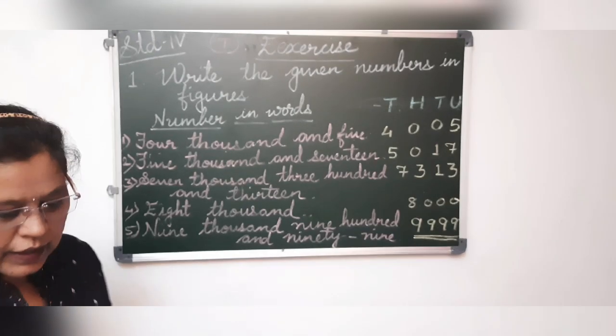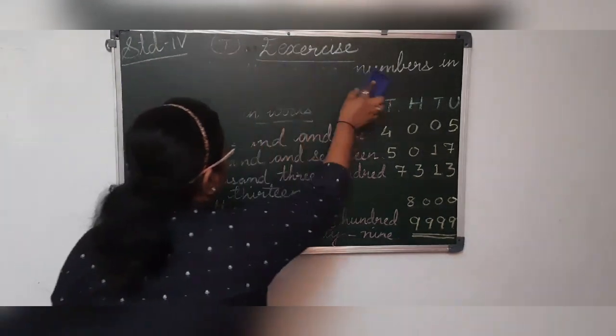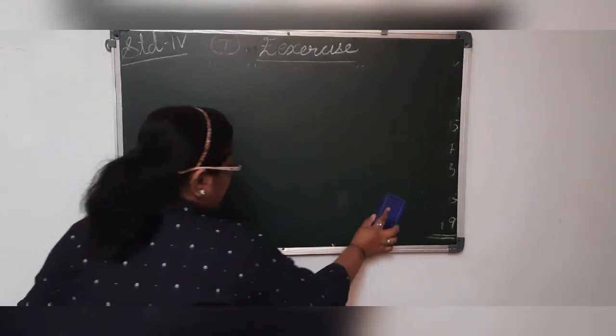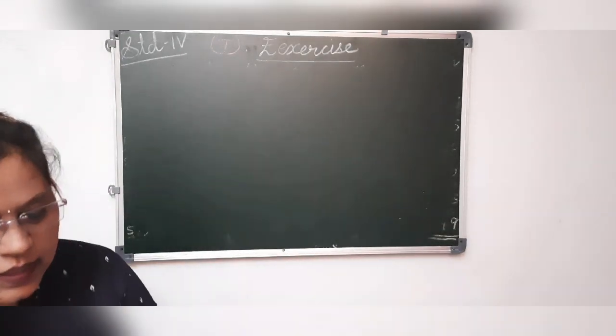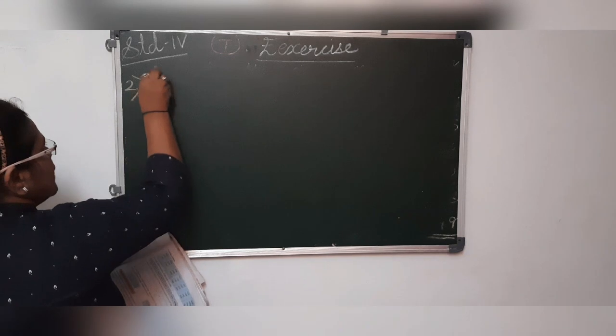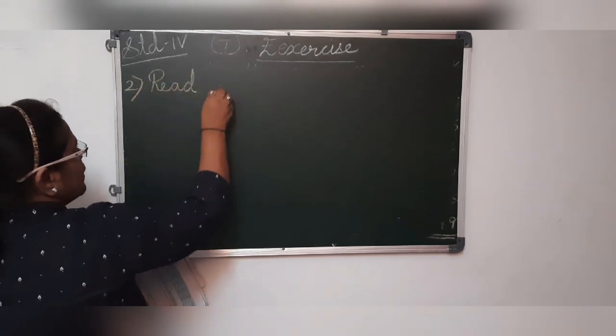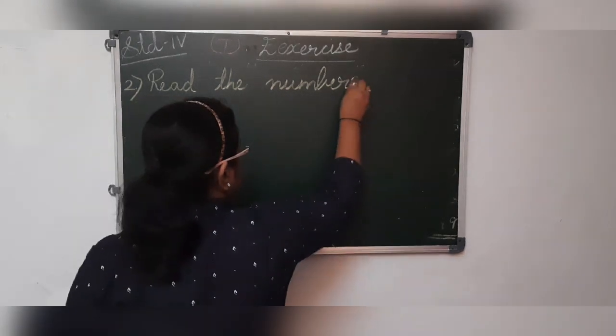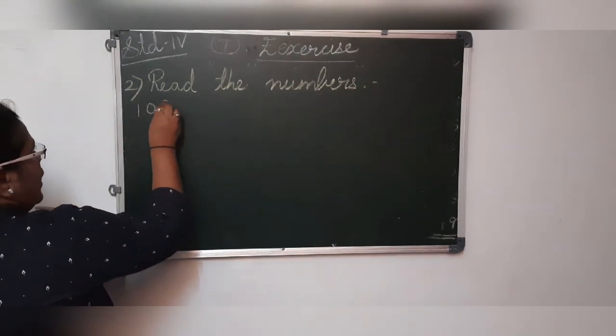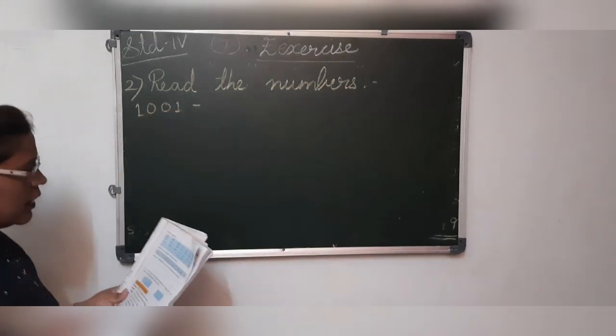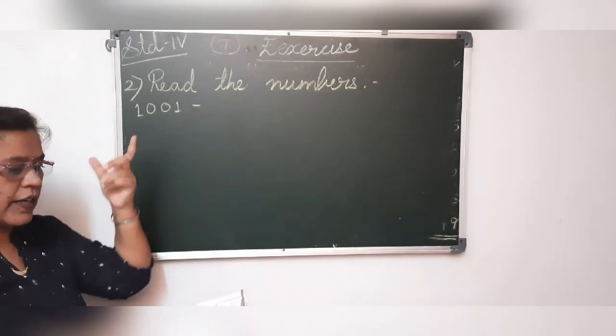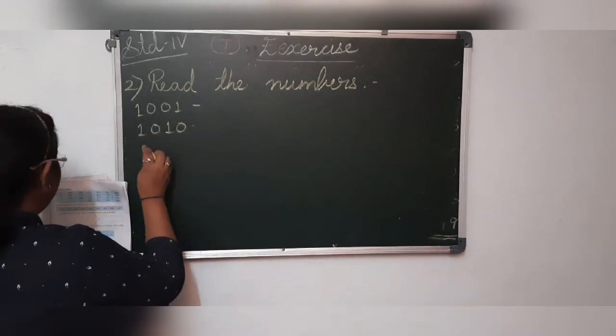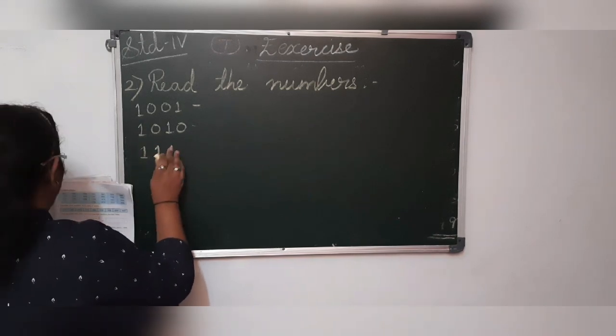Now we will see the sum which is on page number 9. Got it my dear students, are you with me now? Just follow it and practice the sums. Now the second sum says read the numbers. We will read. First one is 1,001. Just name the number. It is 1,010, 1,000, 1,100.